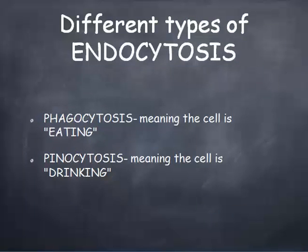Finally, different types of endocytosis. There's phagocytosis, meaning the cell is eating — so basically when the cell is bringing in food that it needs to consume, that would be called phagocytosis. When the cell is drinking, that would be called phagocytosis — meaning the cell is drinking stuff. So basically you can do different types of things depending on what the cell is trying to collect. If you have any questions, please ask. Hope this has been helpful with your review.